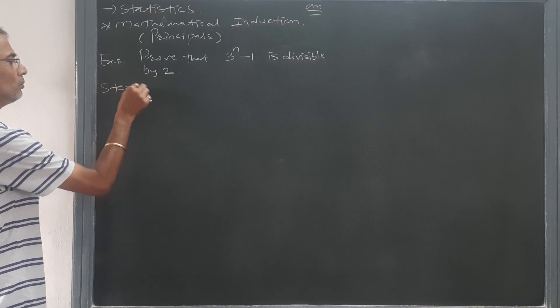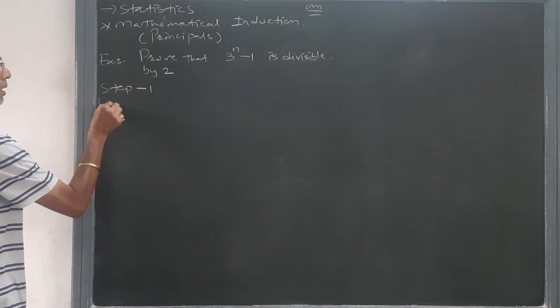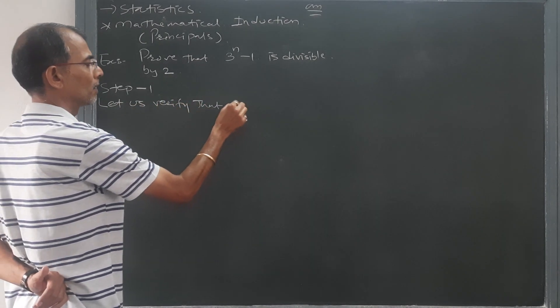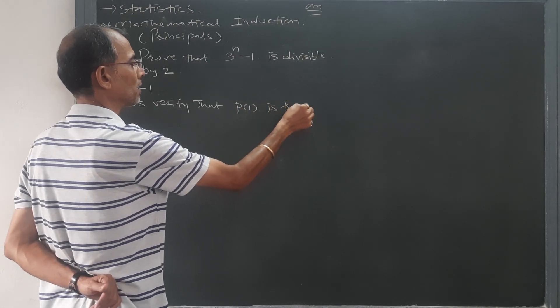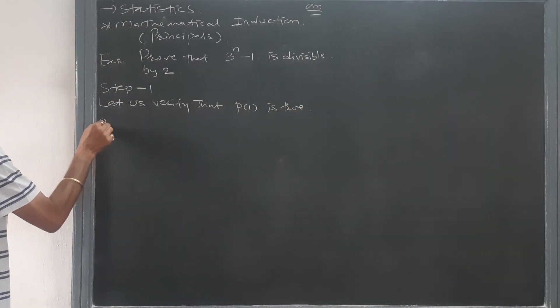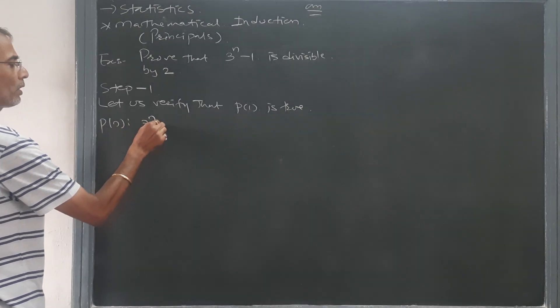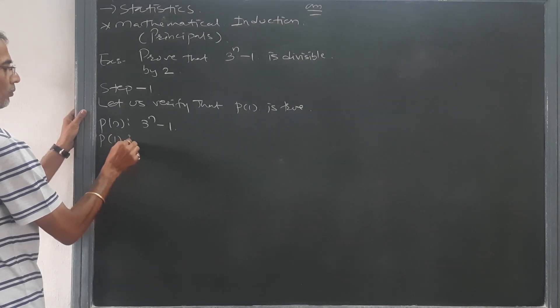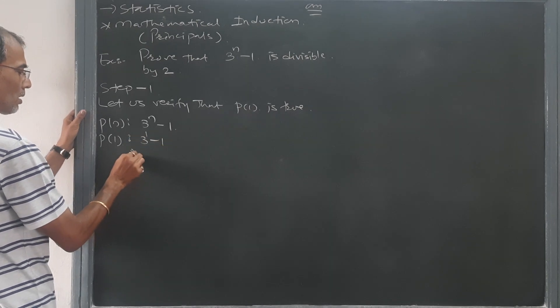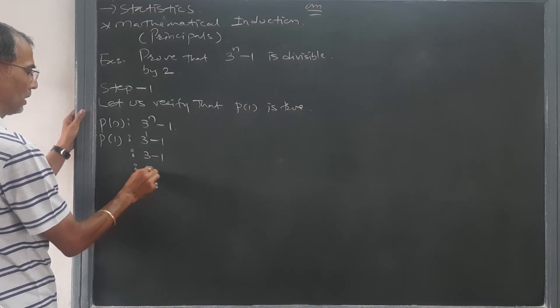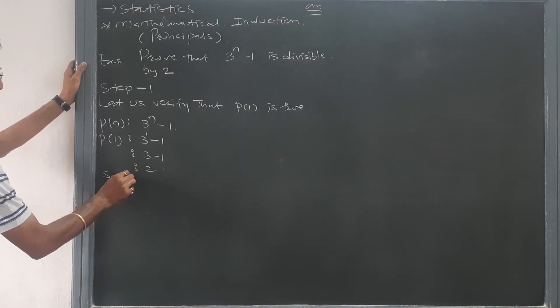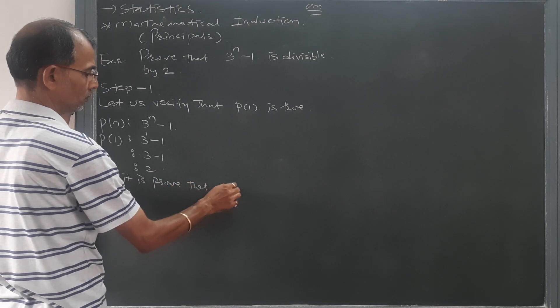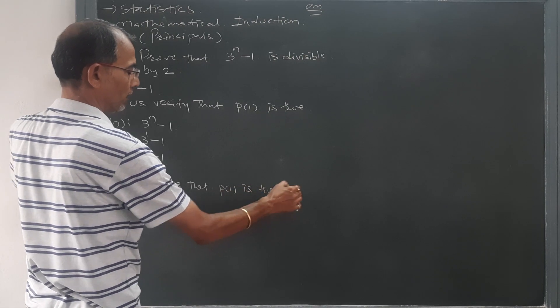According to step number 1, let us verify that P(1) is true. P(n) is 3 raised to n minus 1, and P(1) will be 3 raised to 1 minus 1, which equals 3 minus 1, equals 2. So it is proved that P(1) is true.